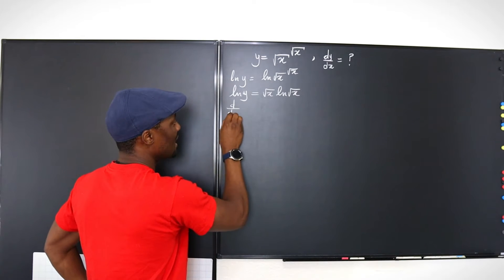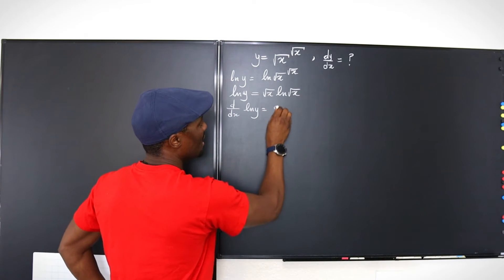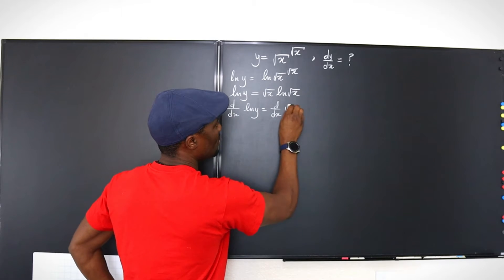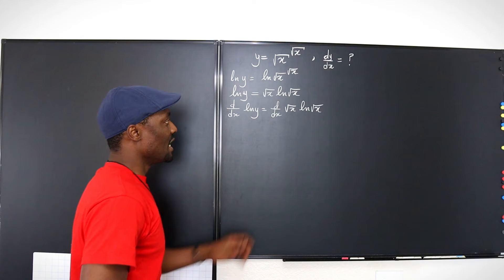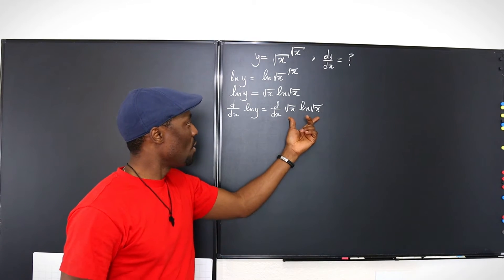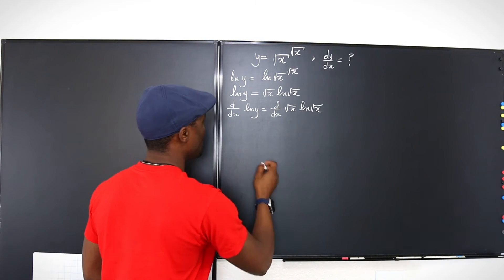So if we differentiate both sides, d/dx of ln(y) equals d/dx of square root of x times ln square root of x. Now this is going to require the product rule. So let's do that. Let's differentiate both sides.